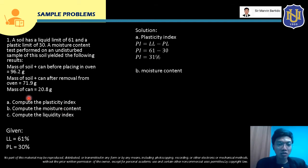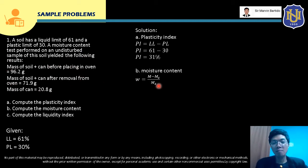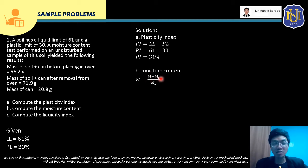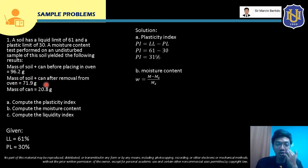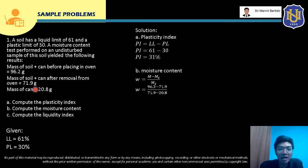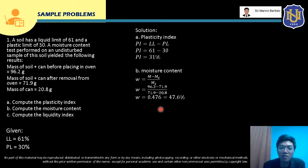For the moisture content, this test is a moisture content test. The formula is: mass of wet soil minus mass of dry soil over mass of dry soil. We can directly substitute the mass of soil plus can values. So (96.2 minus 71.9) over (71.9 minus 20.8) gives us the water content of 0.476, or 47.6%. This is the answer for the moisture content.